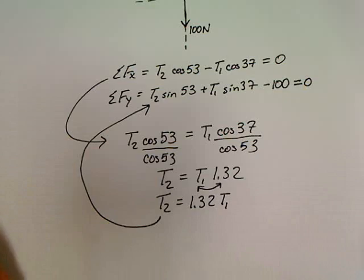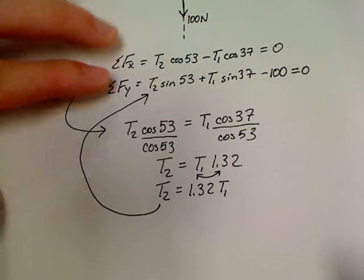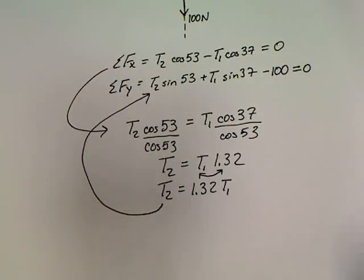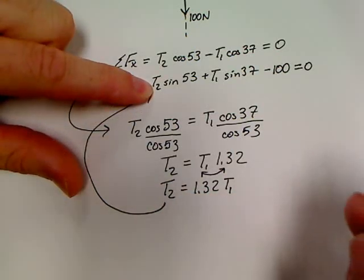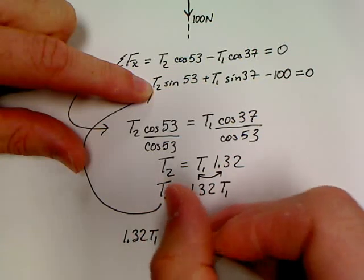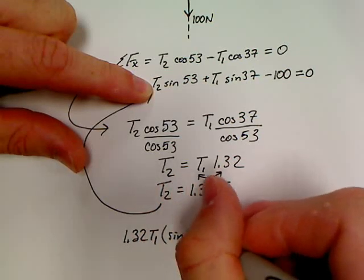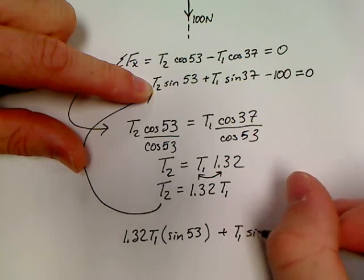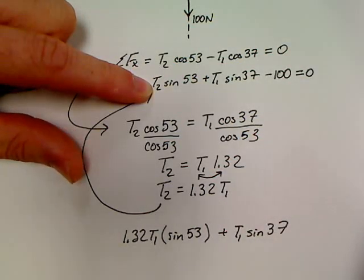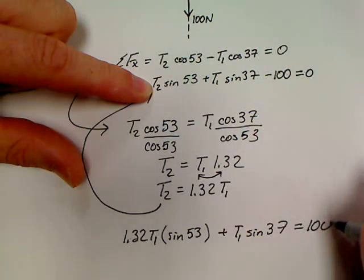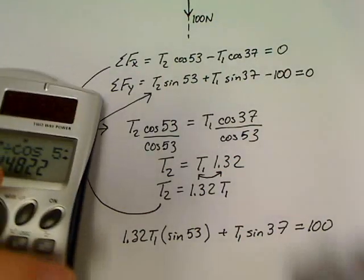This is where students have their hard time with physics a lot of times. Their math grounds are a little lacking. So you can do the physics, which was just the two sums of forces. The rest of this problem is just an algebra question. So this would become, in place of T2, we would have 1.32 T1 times sine 53 plus T1 sine 37. I'm going to go ahead and add the 100 to the other side. Equals 100. Let's do a little bit more math here.